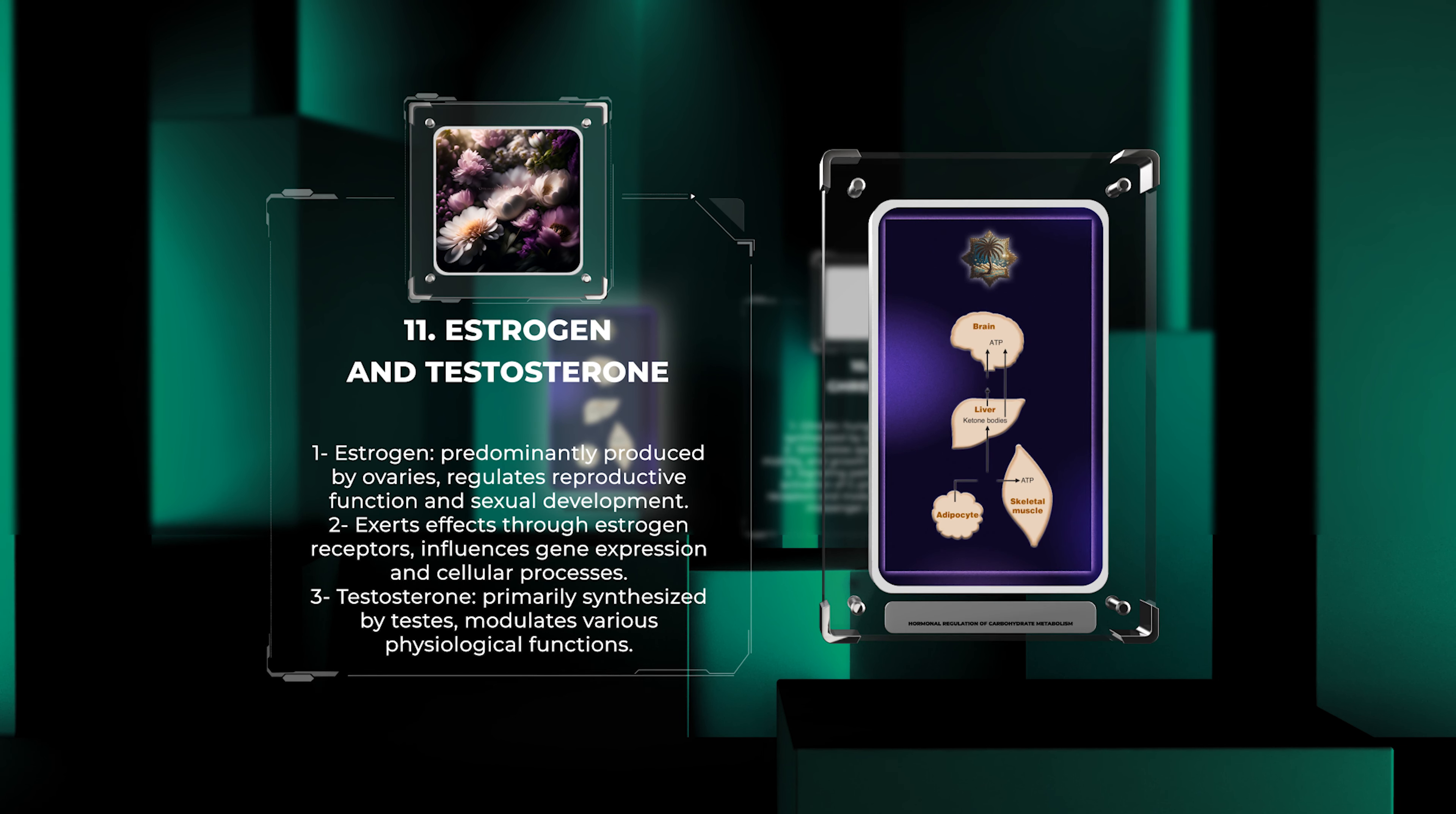Polypeptide hormones, such as amylin and pancreatic polypeptide, are involved in the regulation of appetite, glucose metabolism, and pancreatic functions. Amylin, co-secreted with insulin by pancreatic beta cells, regulates postprandial glucose levels and satiety.